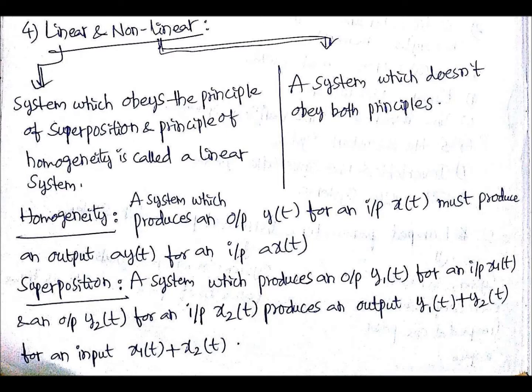Right now, the most important type of system that will go across any control system subject in general is linear and nonlinear systems. A linear system is one which obeys the principle of superposition and the principle of homogeneity, and a nonlinear system is one which doesn't obey both of them.